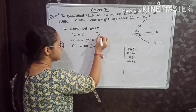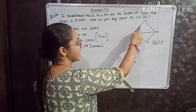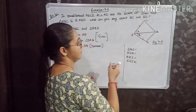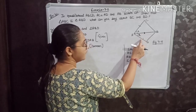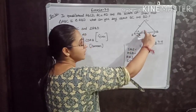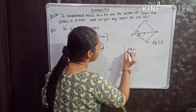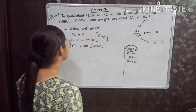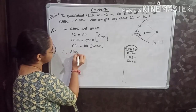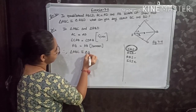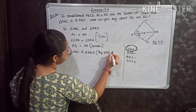Now, these two given statements plus the common side give us: side, angle, side. Between two sides we have the included angle. So the rule that applies is SAS. Therefore, triangle ABC is congruent to triangle ABD by the SAS congruency rule.